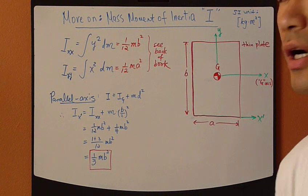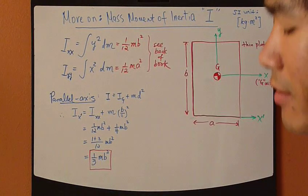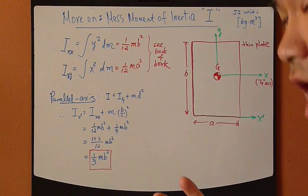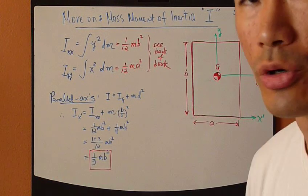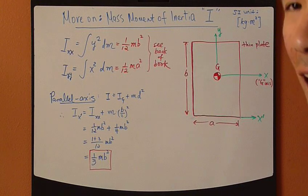I'll just explain a little more on mass moment of inertia, I. I is the rotational resistance of an object to any change of rotational motion. So it's the rotational counterpart to mass.